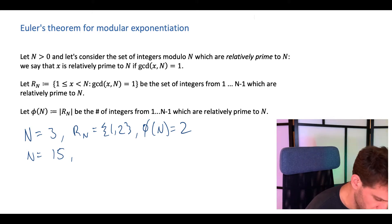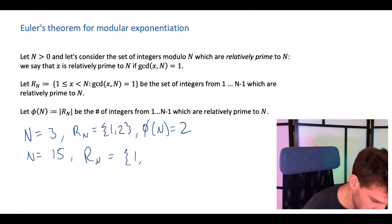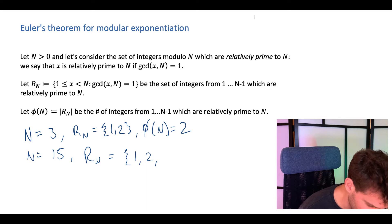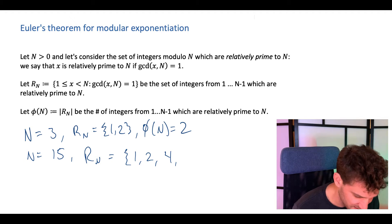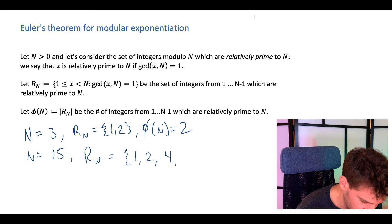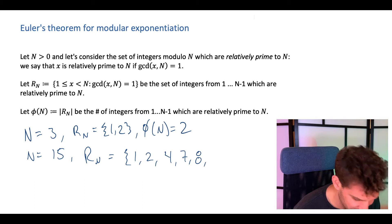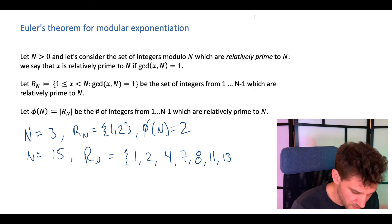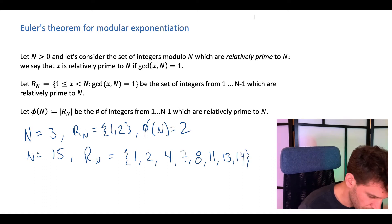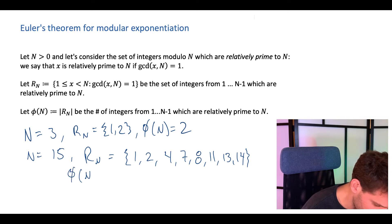What about n equals 15? Well, 1 is relatively prime to 15, so is 2. 3 is not because 15 is 3 times 5. 4 is relatively prime. 5 is not because of the factor 5. 6 isn't because they both have a factor of 3. 7 is relatively prime. 8 is relatively prime. 9 is not because of the factor of 3. 10 isn't because of the factor of 5. 11 is relatively prime. 12 is not because of 3. 13 and 14 are both relatively prime to 15. So we get 8 elements, and phi of n equals 8.